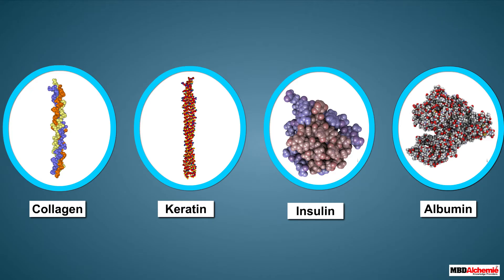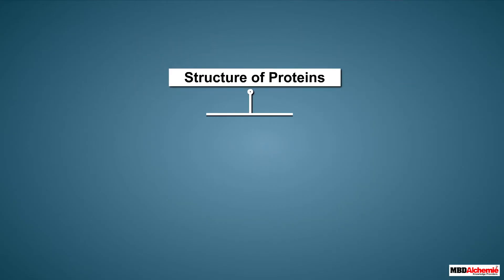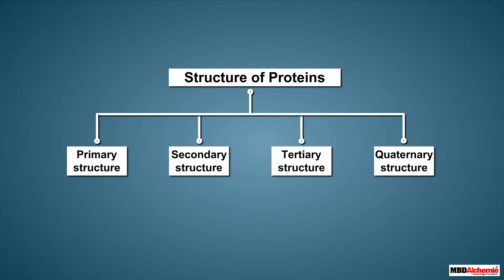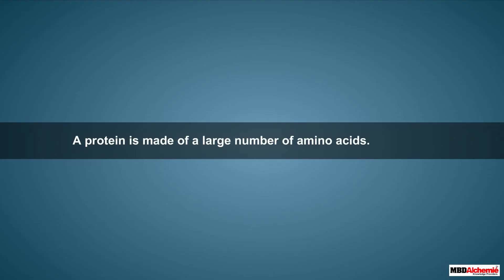The structure of proteins is quite complex. We can study the structure of proteins in four different levels: primary, secondary, tertiary, and quaternary structure of proteins.